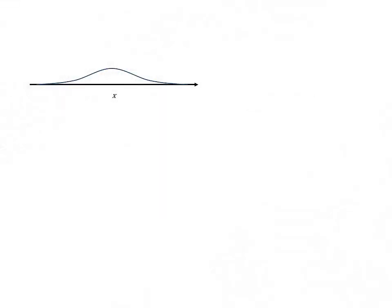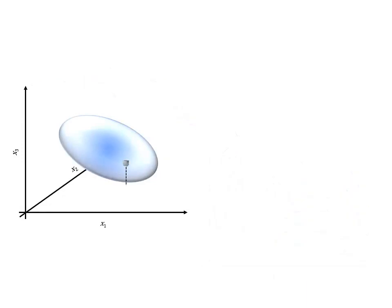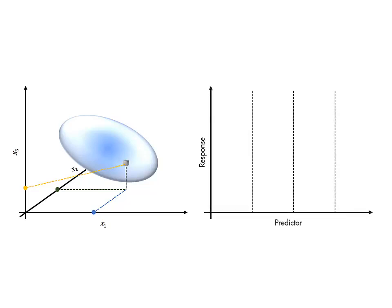Gaussian process regression works by extending the idea of a probability distribution of numbers to a probability distribution of functions. When we sample an n-dimensional normal distribution, we get n numbers, which we typically think of as a point in n-dimensional space. But we can also think of them as the values of a function sampled at n points.